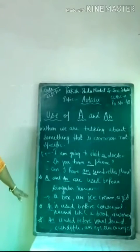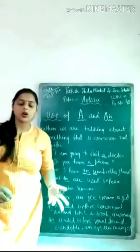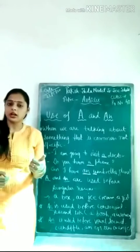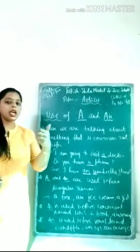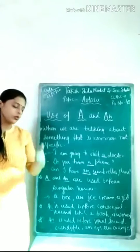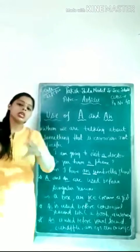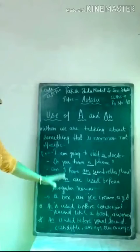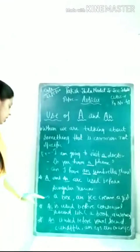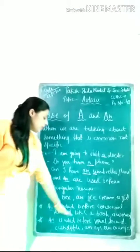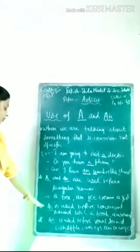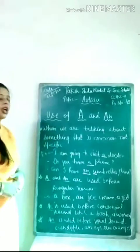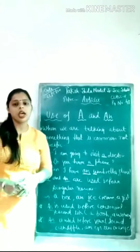Third rule: A is used before a consonant sound. We have 26 letters in the English alphabet — A, E, I, O, U are 5 vowels and the remaining 21 letters are consonants. If any word starts with a consonant, we use A — for example, a book, a woman, a girl. And An is used before a vowel sound — an apple, an ice cream, an orange, an umbrella.